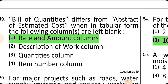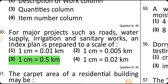Bill of estimates differs from abstract of estimated cost in that the rate and amount columns are left blank in tabular form. For major projects such as roads, water supply, irrigation, and sanitary works, the index plan is prepared to a scale of 1 cm equals 0.5 km.